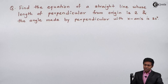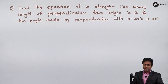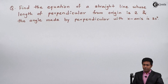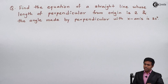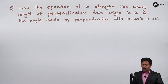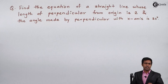Hello everyone. In this problem, we have to find out the equation of a straight line whose length of perpendicular from the origin is 2 and the angle made by the perpendicular with the x-axis is 30 degrees.